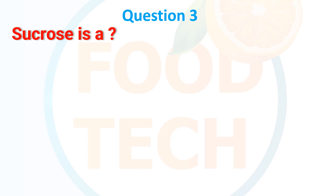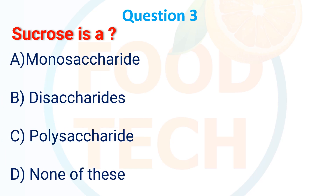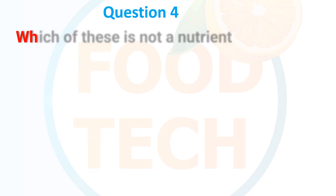Question 3: Sucrose is — A. Monosaccharide, B. Disaccharide, C. Polysaccharide, D. None of these. The answer is B. Disaccharide.